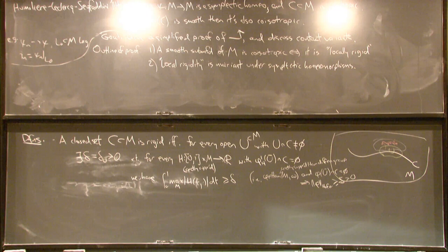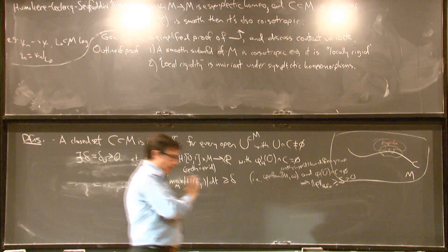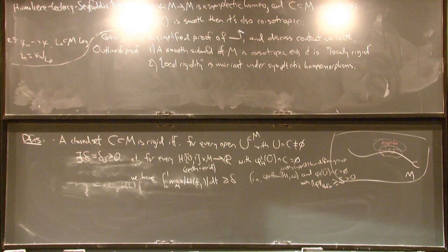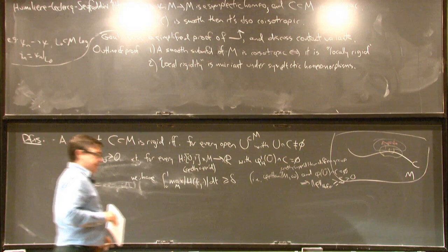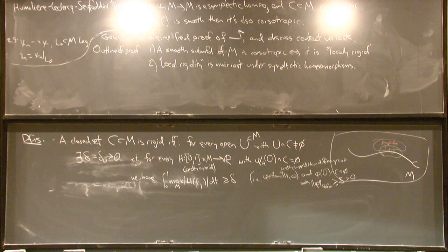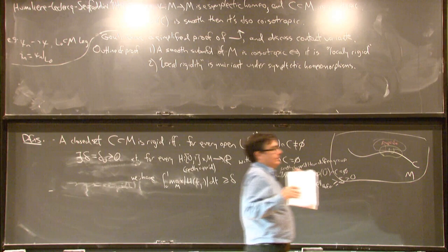So this is the definition of rigidity. Modulo the distinction between rigidity and local rigidity, I'm saying that I am characterizing Lagrangianness, or more generally co-isotropy, by saying that something is Lagrangian provided that it requires some amount of Hofer energy to destroy any open set from it. So what does locally rigid mean? Well, it's just like comparing local compactness to compactness. A topological space is locally compact provided that every point has a neighborhood that has a sub-neighborhood that is compact.